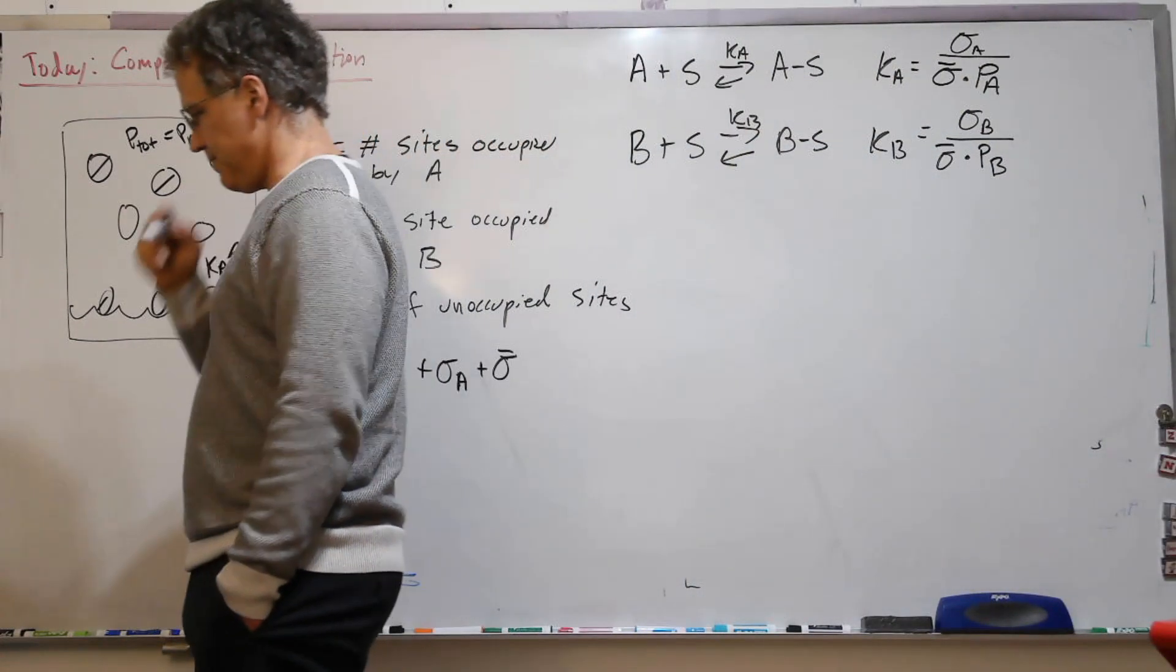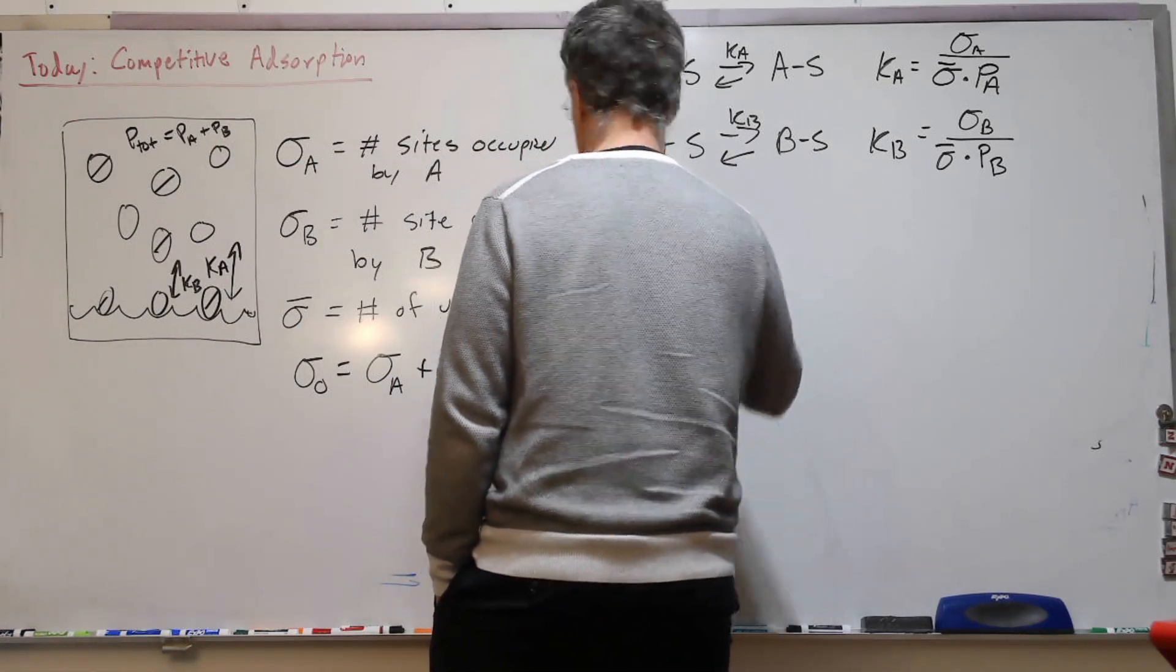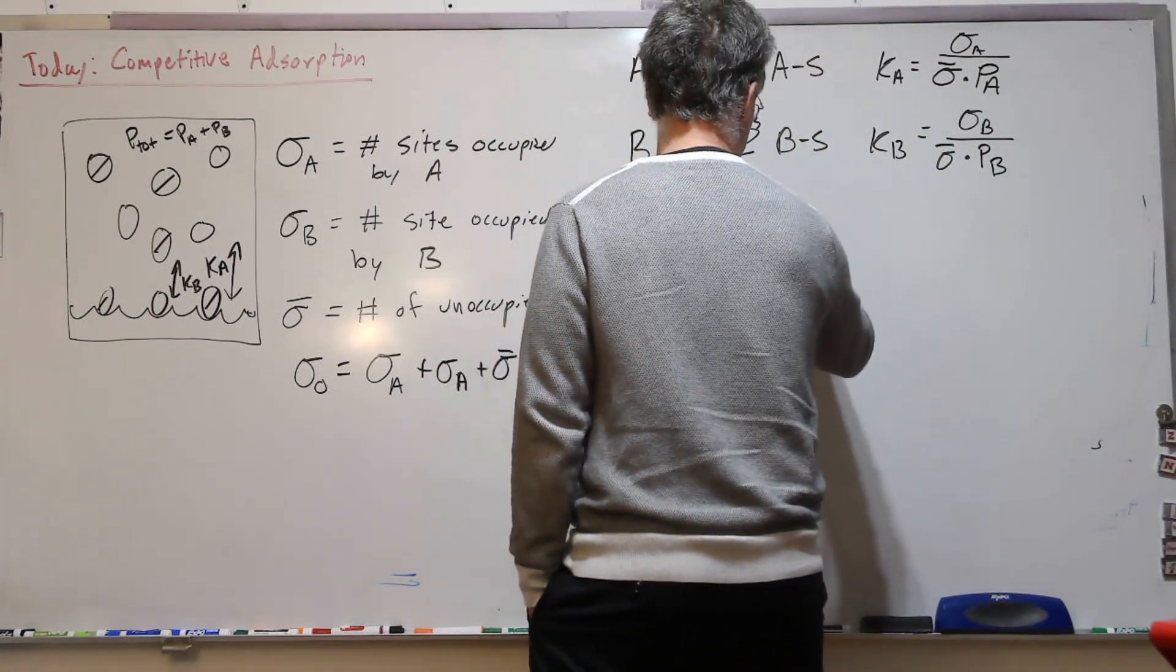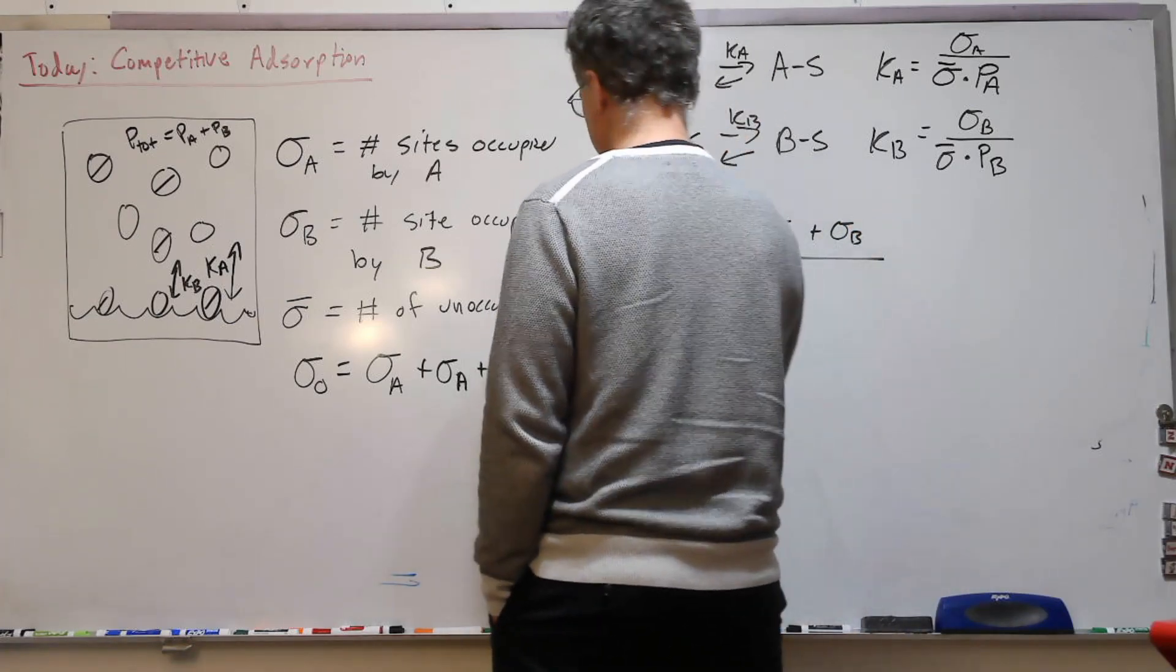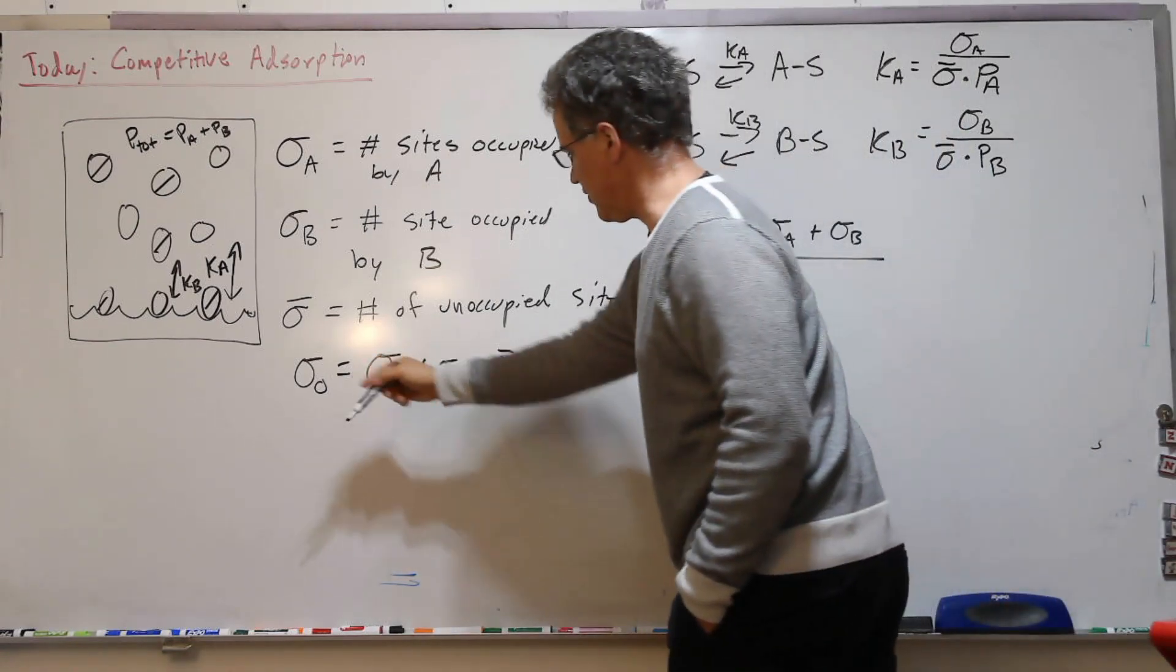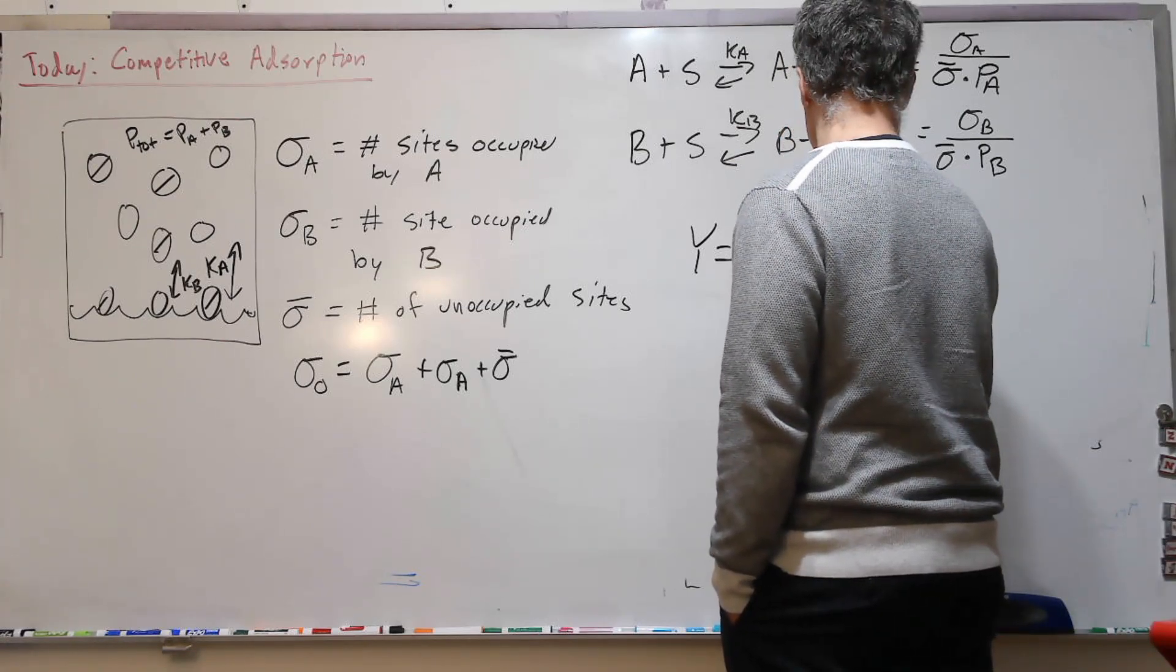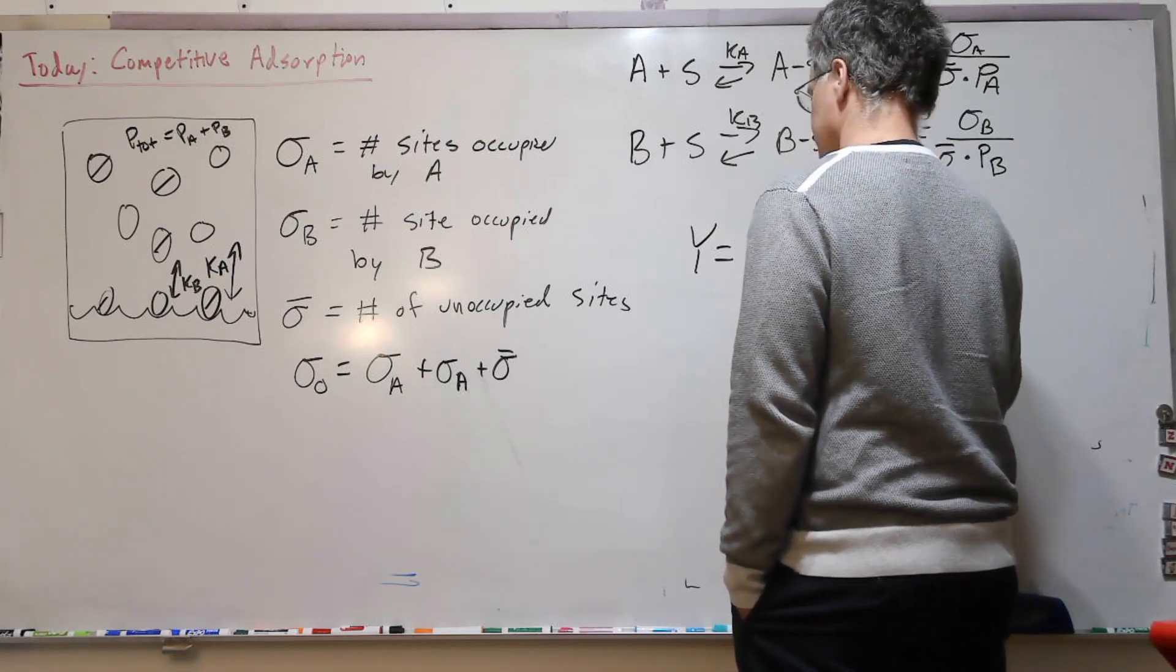Now we have our expression for fraction. We're interested in our fraction of occupied sites, so that's going to be sigma A plus sigma B over the number of occupied sites, which is sigma_0. I'll just write that as sigma bar plus sigma A plus sigma B.